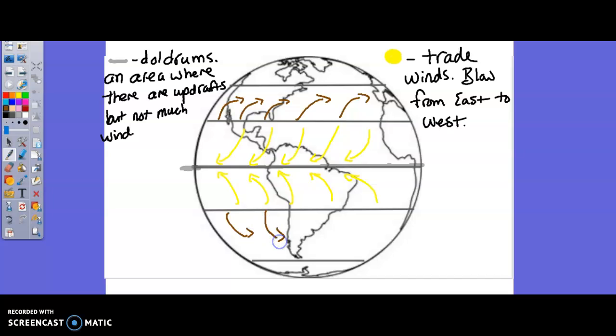These prevailing westerlies, you can see here's the United States. They are what move the weather across the United States. So if we have bad storms out west, more than likely they're going to make it our way. We do have a jet stream that can influence that every once in a while, but more than likely, they're going to bring it out our way. So why is this one so important?